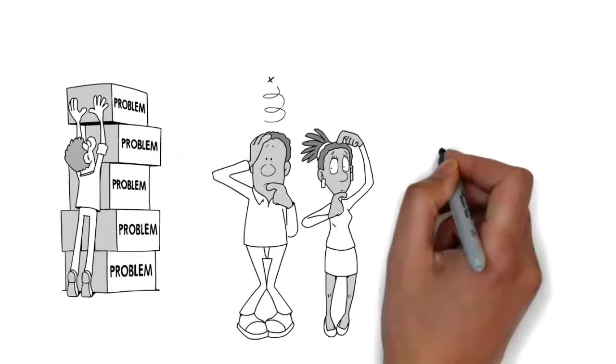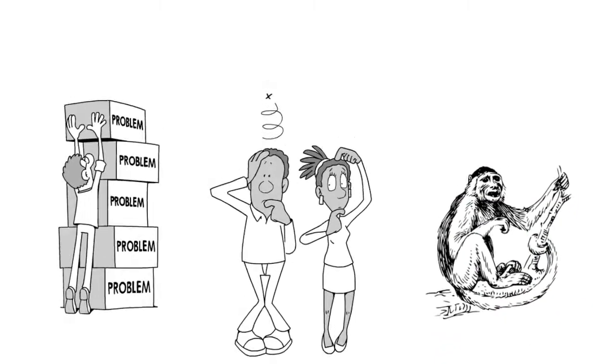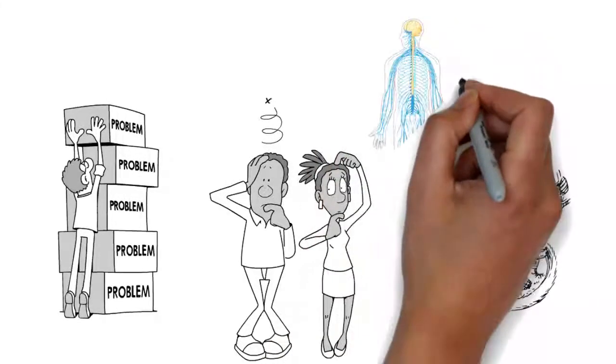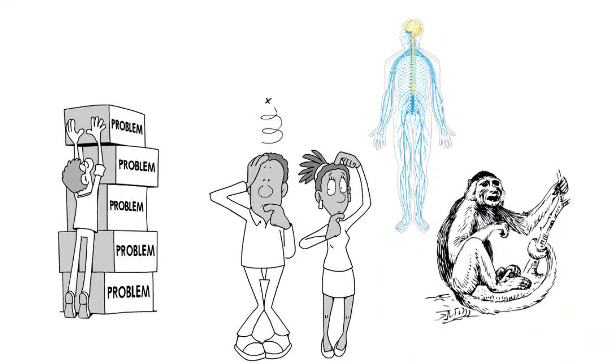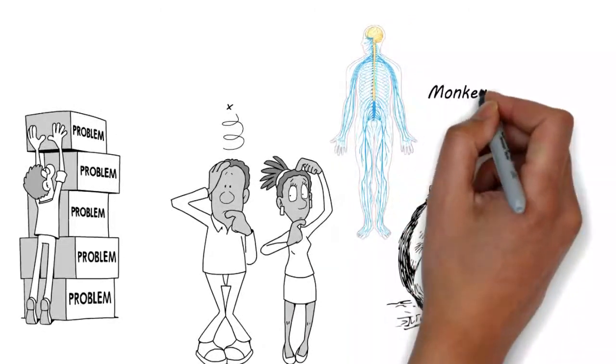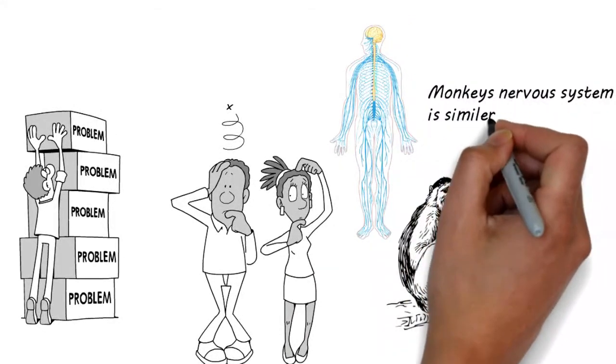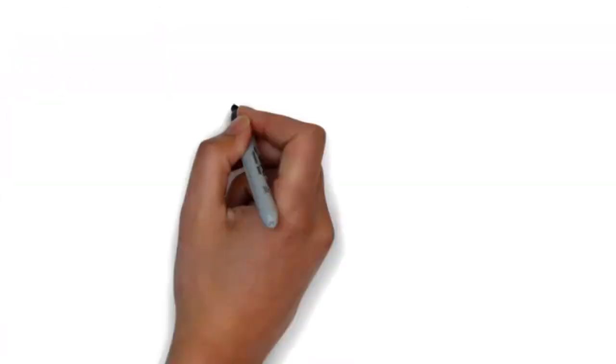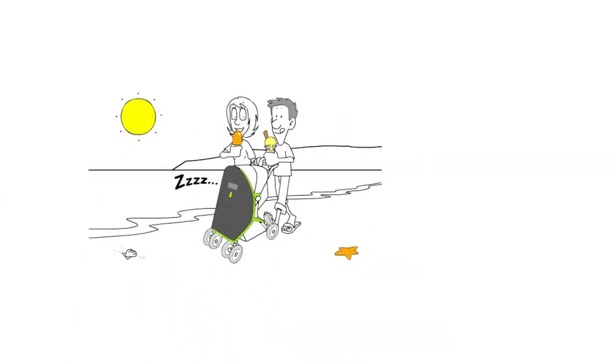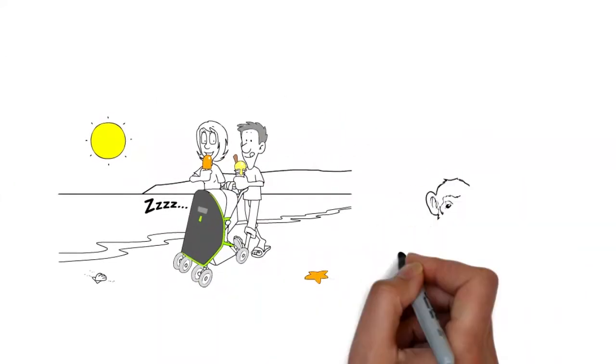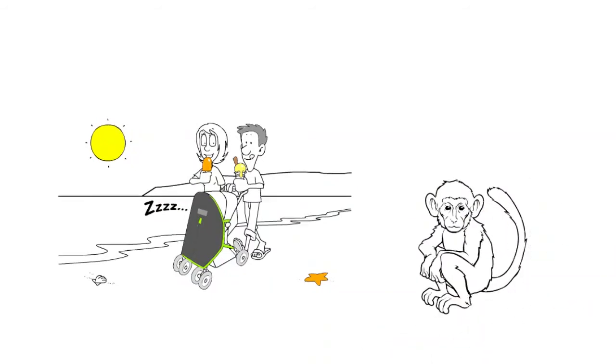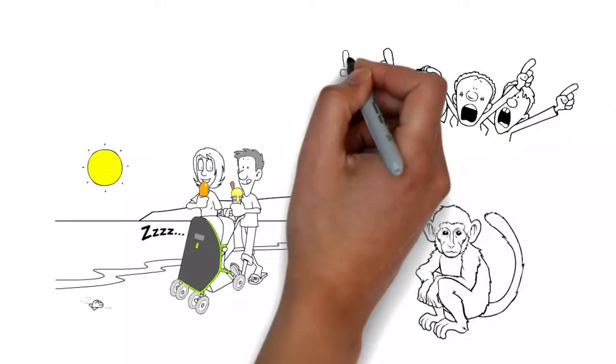For example, there are some experiments done on rhesus monkeys, especially when studying parts of the human nervous system which is not like mice or rodents. Indeed, monkeys' nervous systems are more similar to ours. Another example is the study of parenting deficits, in which monkeys are separated from their mothers. This invokes strong objections from the public and animal rights organizations.